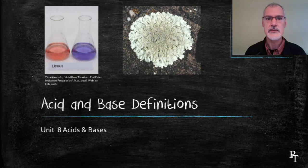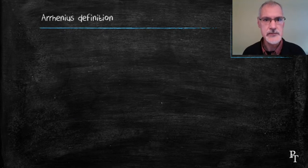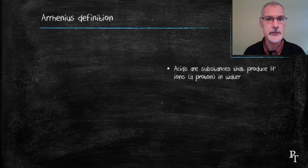This program is going to look at how the definitions of acids and bases have evolved over time. One of the first attempts at defining acids and bases was the work of Svante Arrhenius. In 1903, he won a Nobel Prize for his work.